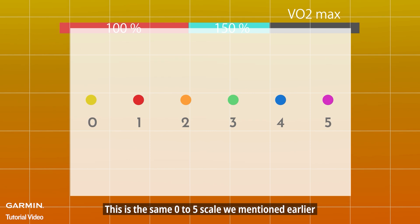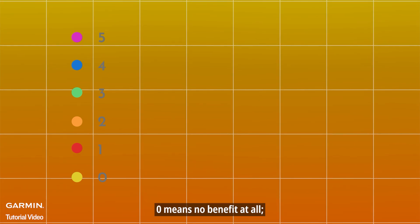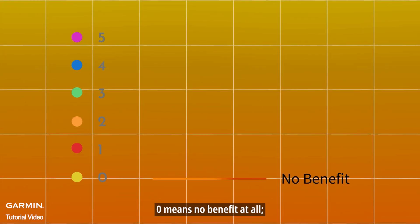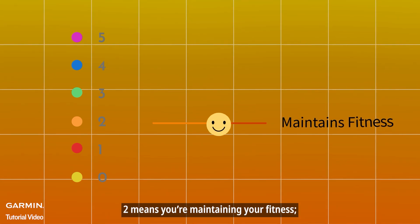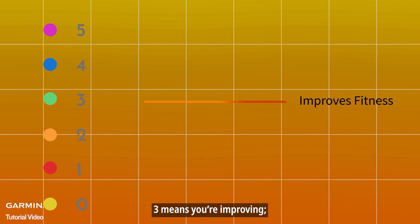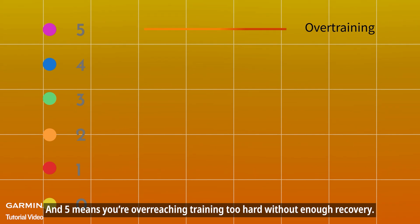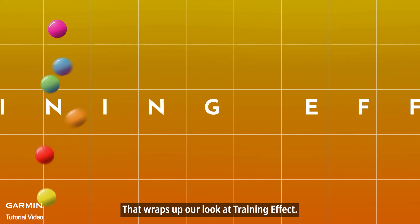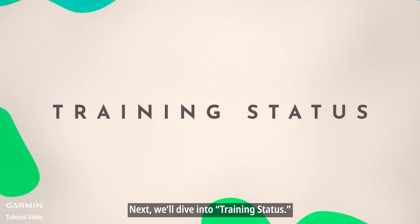This is the same 0–5 scale Garmin uses to help runners understand how effective each workout really was. 0 means no benefit at all. 1 means a minor benefit. 2 means you're maintaining your fitness. 3 means you're improving. 4 means a significant improvement. And 5 means you're overreaching — training too hard without enough recovery. That wraps up our look at training effect. Next, we'll dive into training status.